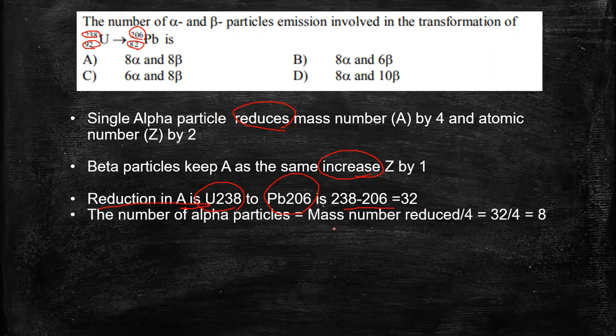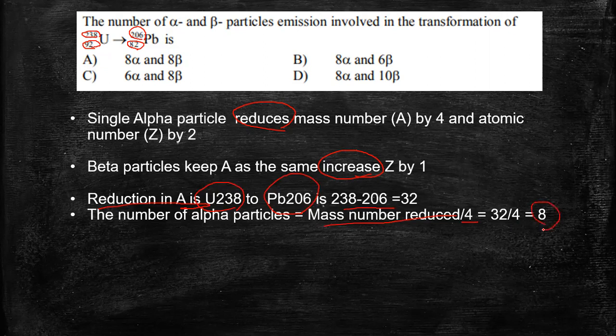So from changing U238 to Pb206, the total number of change in the mass is 32. So the number of alpha particles will be equal to the mass reduced divided by 4. Why is this divided by 4? Because a single alpha particle reduces it by 4. So 32 by 4 which gives us 8. Now here there are three different options which have 8 alpha particles, so one of these should be the answer.